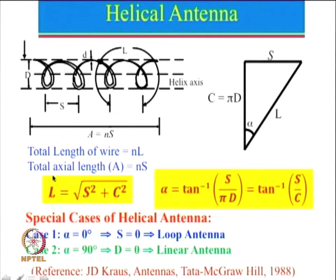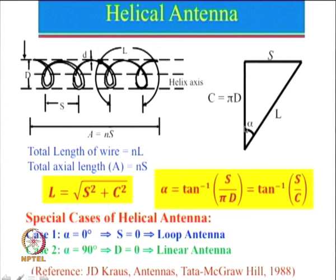We can apply a simple rule since there is a right angle: L equals the square root of s-squared plus c-squared. This gives the length of one turn of the helical antenna. The total axial length will be n times s, since s is the spacing between one turn, and the total length of the wire will be n — the number of turns — multiplied by the length of one single turn.